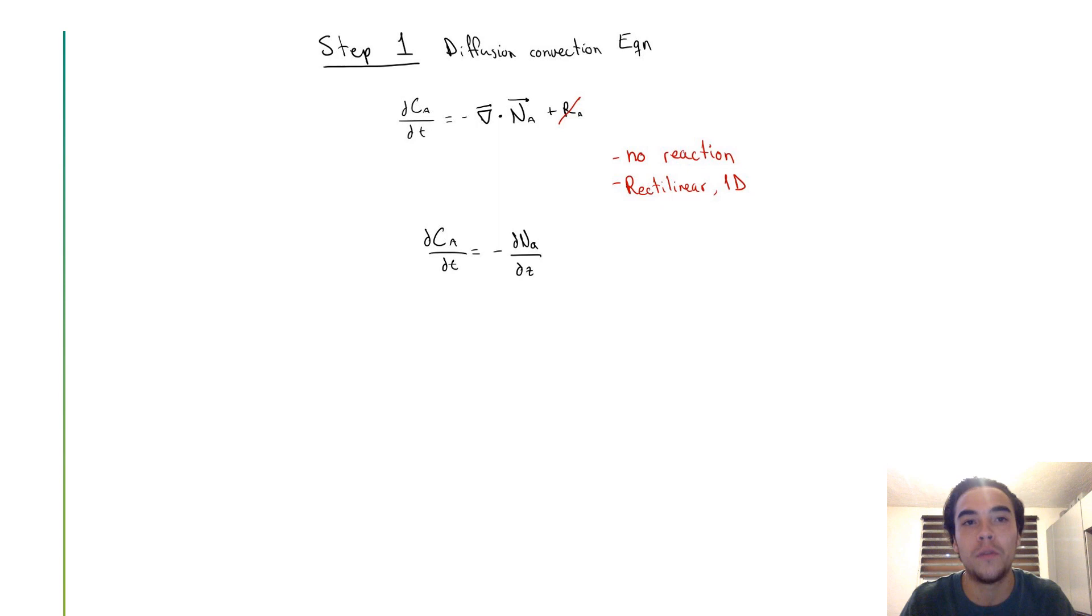For step 1 we have the diffusion convection equation. We assume that there is no reaction and it's a rectilinear system, so it only goes in one direction. We have this following formula after these assumptions.